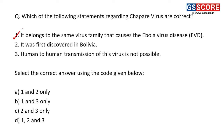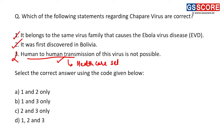Third statement: human-to-human transmission of Chaper virus is not possible — this is an incorrect statement. There are instances where this virus has passed from one person to another, especially in healthcare settings. Human-to-human transmission is observed particularly in healthcare settings. So only the first two statements are correct, and the answer is A — 1 and 2 only.